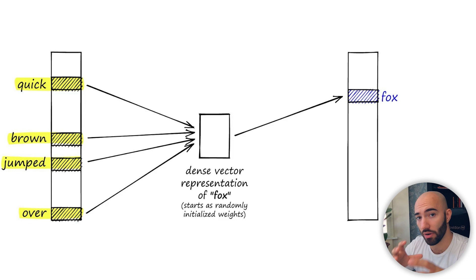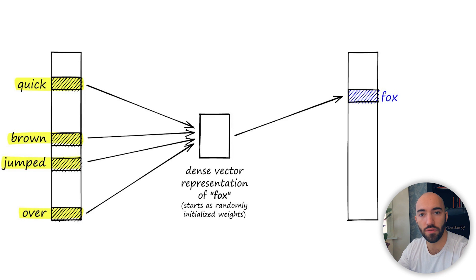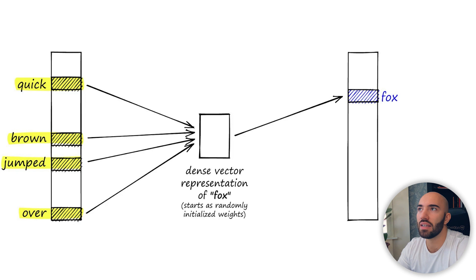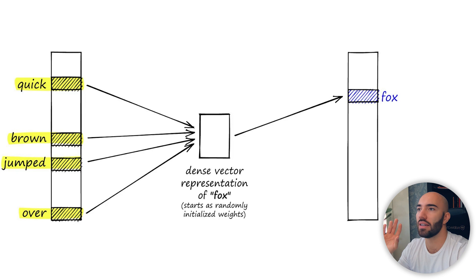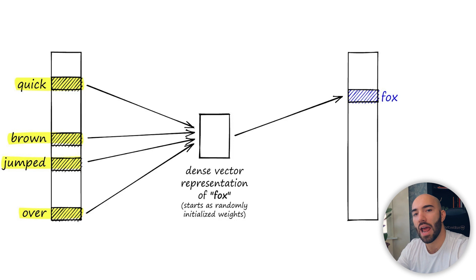Word2Vec really seemed to act as the catalyst for a lot of other vector embeddings. From Word2Vec we got sentence2vec, doc2vec — we even had one called BataPicture2vec which is vector embeddings for major league baseball players. A lot of different 'two-vec' methods came out of the woodworks after the original Word2Vec, and then we also had others like GloVe as well, which is worth a mention. Nowadays Word2Vec is pretty outdated and we wouldn't really use it, so we'll move on to having a look at sentence similarity.